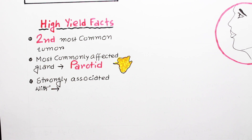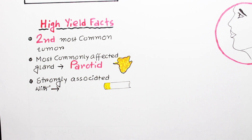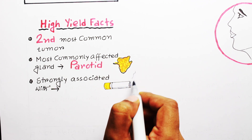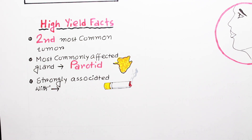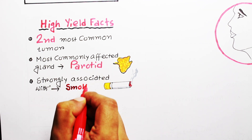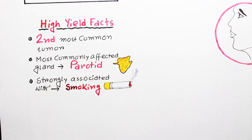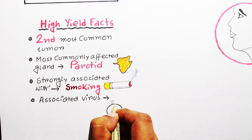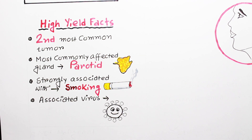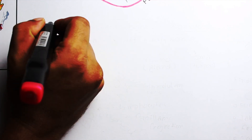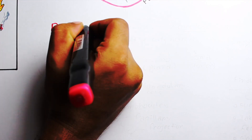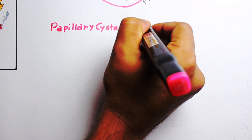The tumor was traditionally considered a disease of men because of smoking habits. Previously, the male to female ratio was 10:1, but nowadays, due to increasing smoking habits among women, recent reports have identified a substantial percentage of patients who are women. Researchers have also found a virus associated with this tumor — the Epstein-Barr virus.